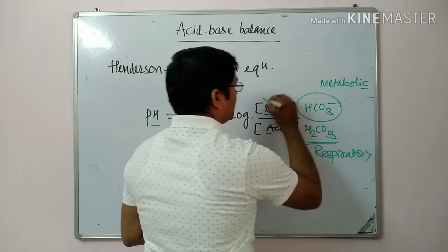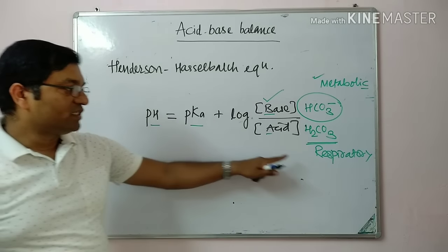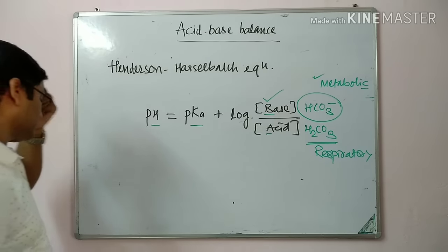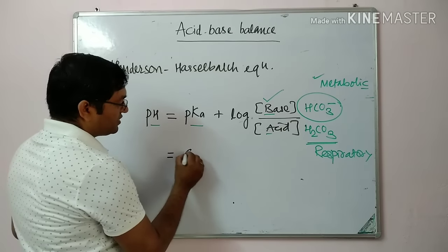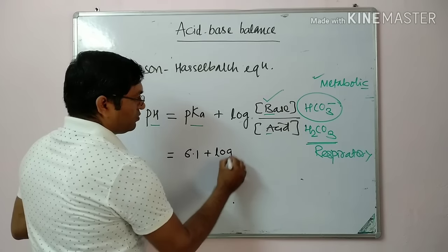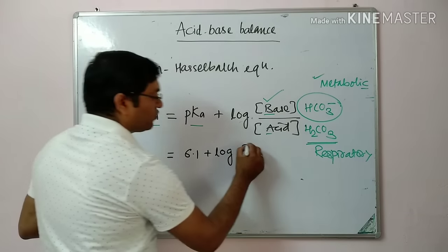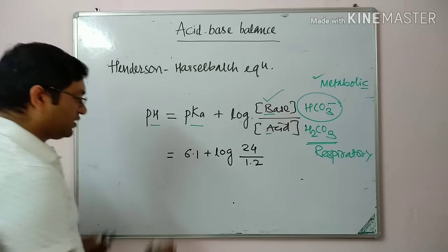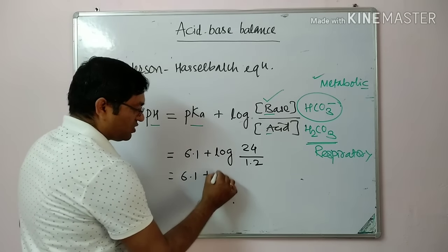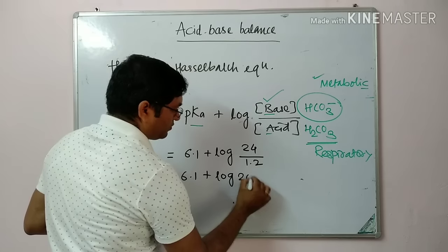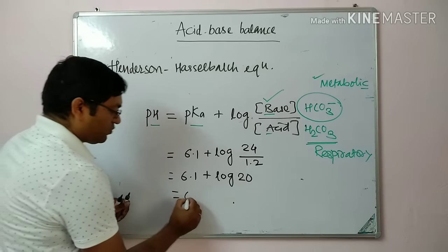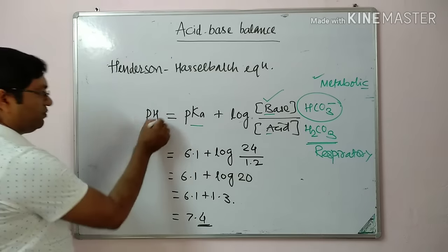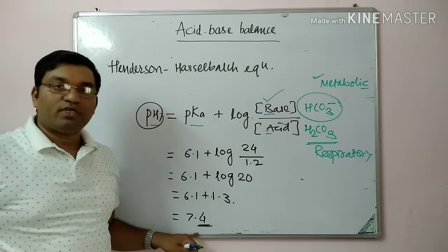In the bicarbonate buffer, the pKa of carbonic acid is 6.1. Using the equation: pH = 6.1 + log(24/1.2) = 6.1 + log(20) = 6.1 + 1.3 = 7.4. So the pH of the body is 7.4, confirming the Henderson-Hasselbalch equation.